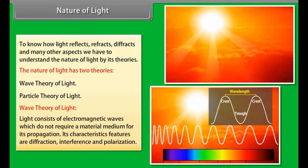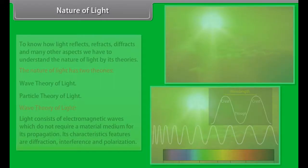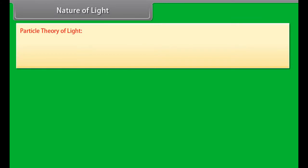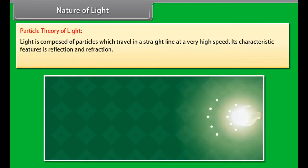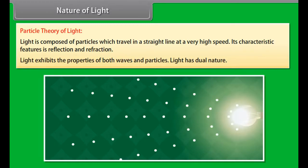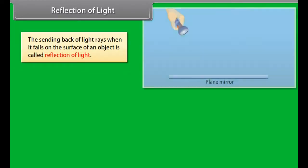Wave theory of light: Light consists of electromagnetic waves which do not require a material medium for its propagation. Its characteristic features are diffraction, interference, and polarization. Particle theory of light: Light is composed of particles which travel in a straight line at a very high speed. Its characteristic features are reflection and refraction. Light exhibits the properties of both waves and particles. Light has dual nature.